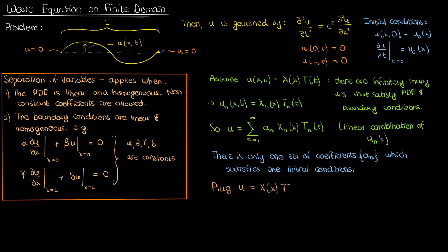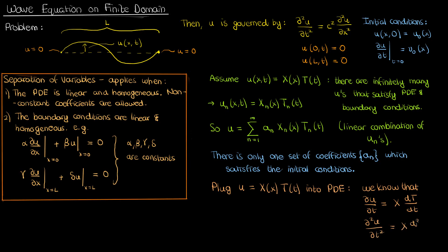Since we now know what we're doing, we can go ahead and solve the PDE. To do this we'll need to substitute our separable solution into the PDE, so we'll need its second time derivative and its second spatial derivative. If we differentiate u with respect to t, the function X only contains terms in x, so we can treat X as a constant. The derivative of u with respect to t is just X times the time derivative of T. Differentiating again gives X times the second derivative of T with respect to time — ordinary derivatives since T is only a function of time. Similarly, the second derivative of u with respect to x gives T times the second derivative of X with respect to x.